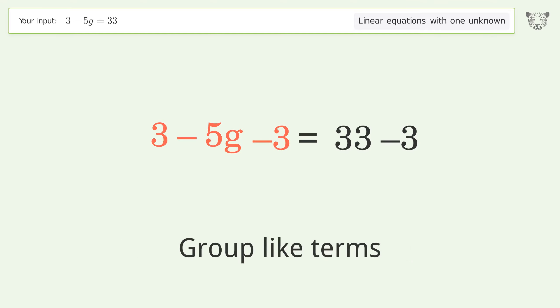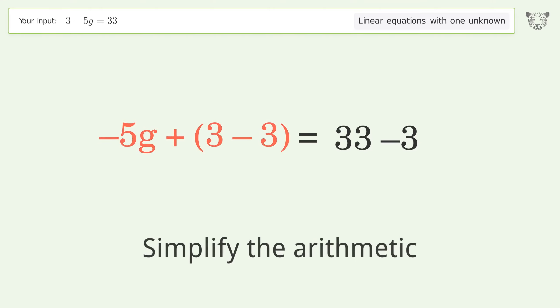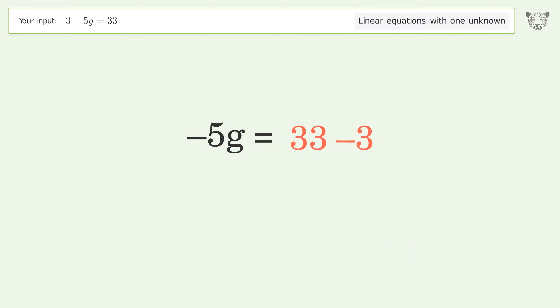Group like terms. Simplify the arithmetic. Isolate the g. Divide both sides by negative 5.